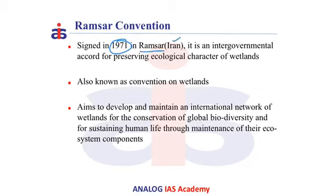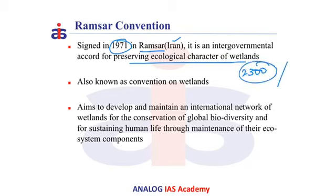It is an intergovernmental accord for preserving the ecological character of wetlands. Currently, there are about 2,300 Ramsar sites all over the world, of which the UK has the maximum number — 175 wetlands.